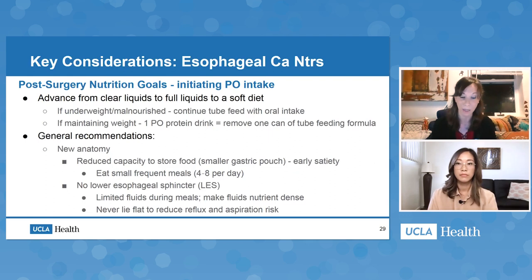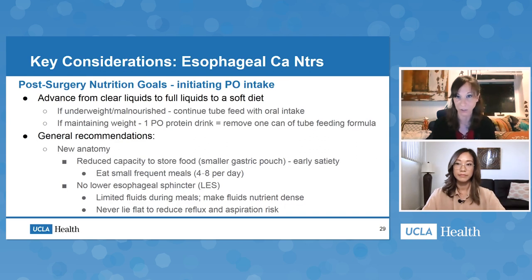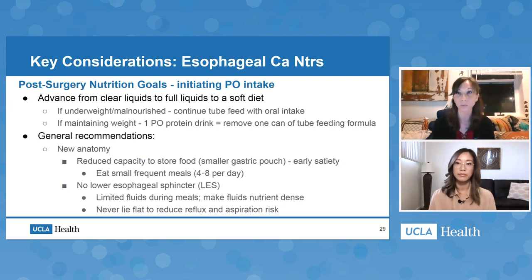As we work on returning a patient to PO intake, we always start with clear liquids just to make sure the new anatomy is functioning properly, then move very quickly onto full liquids where patients can actually start to get some protein and calories. As tolerated, we move them onto a soft diet, and this is when we can start considering reducing the tube feed. If a patient is underweight or malnourished, we won't stop the tube feeding while bringing back oral intake. If they've been maintaining weight well, we can teach them that for every oral protein shake they take in — about 250 calories and 15 grams of protein — we can remove one can of tube feeding formula.